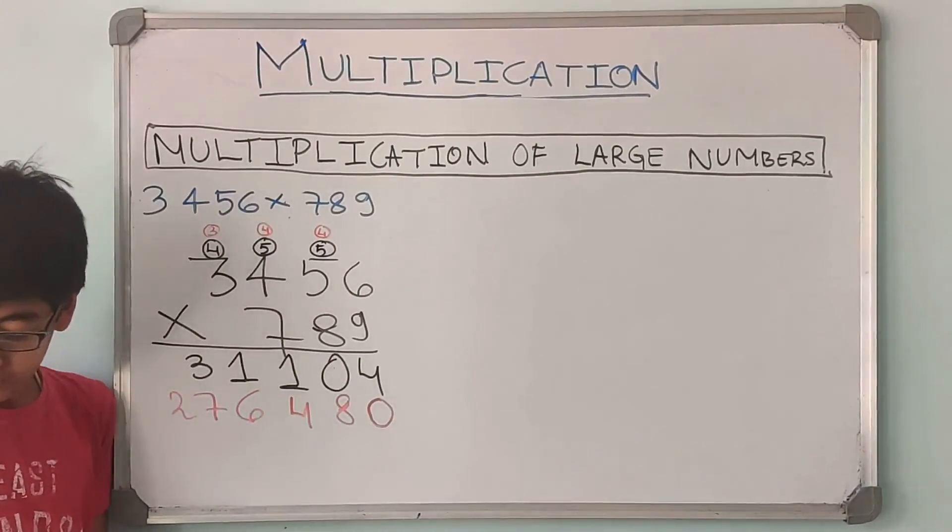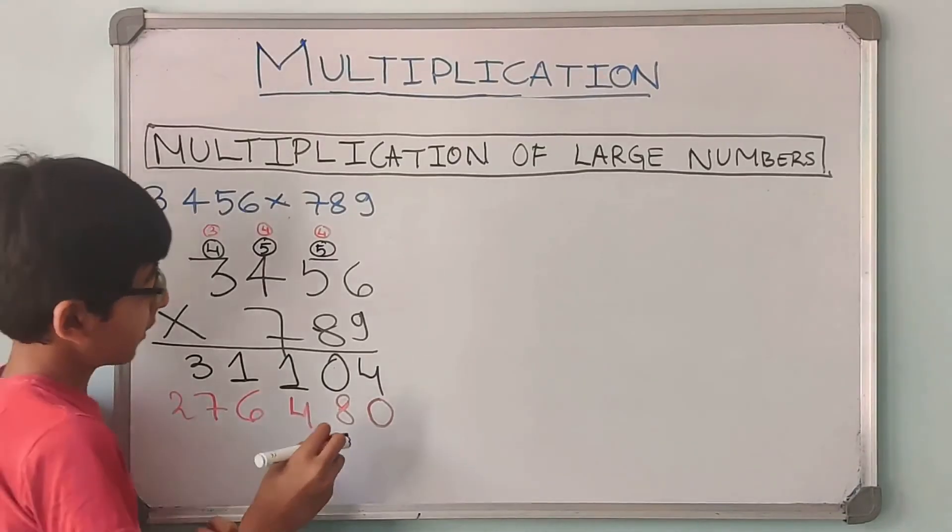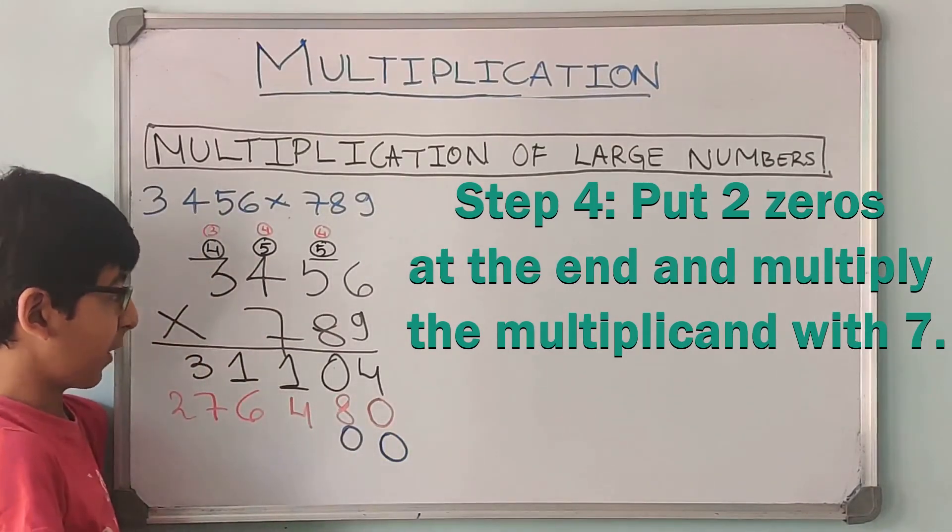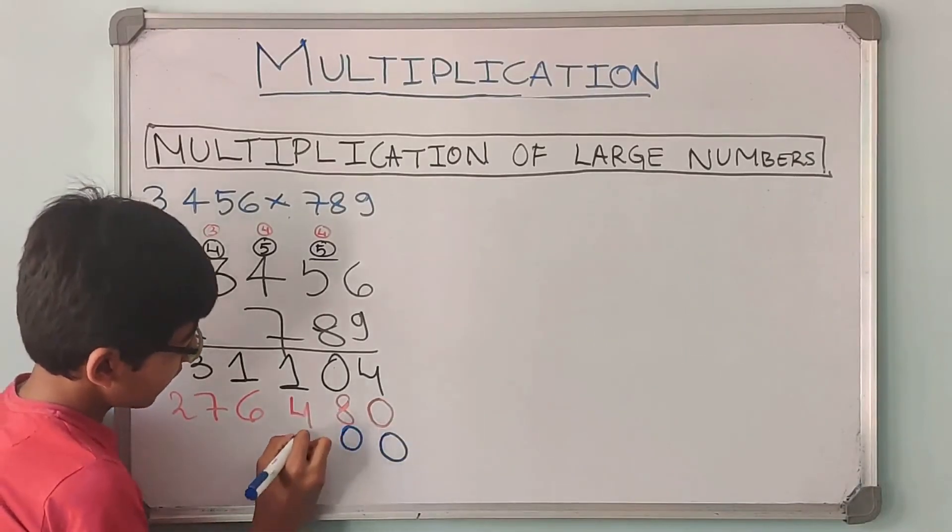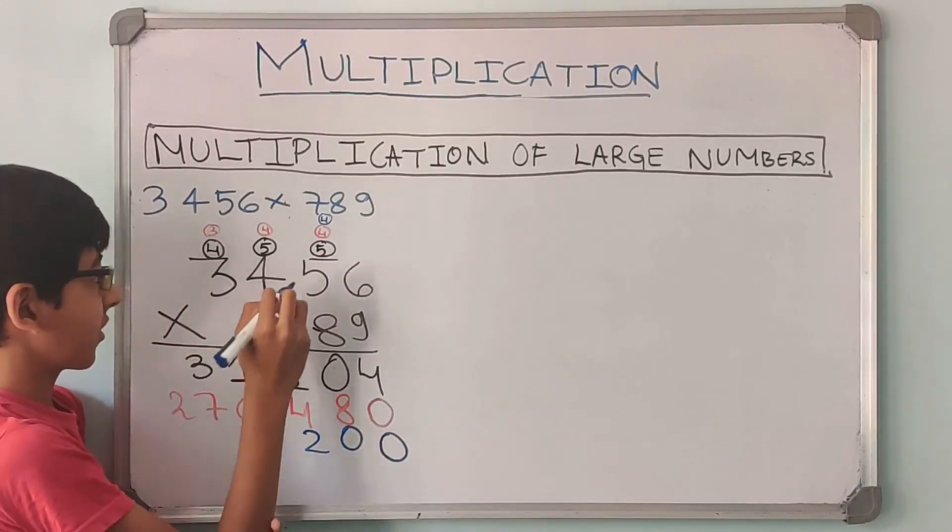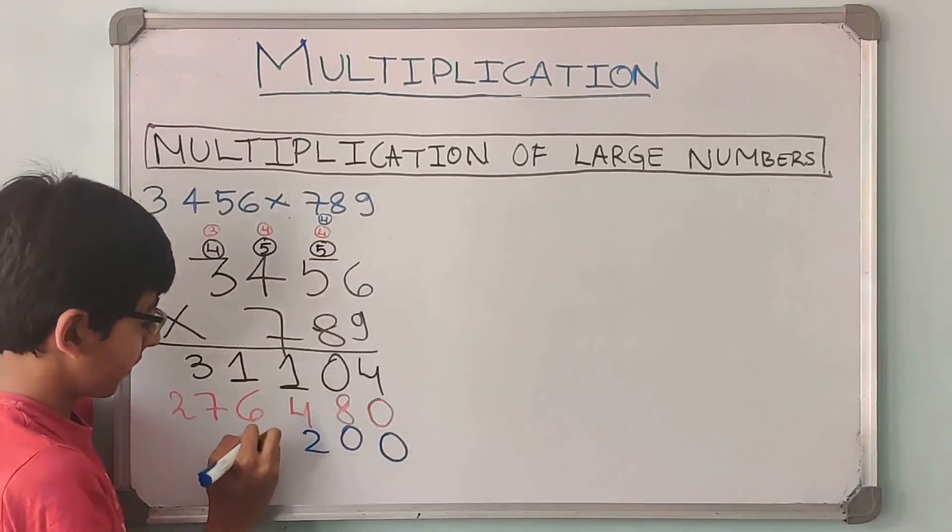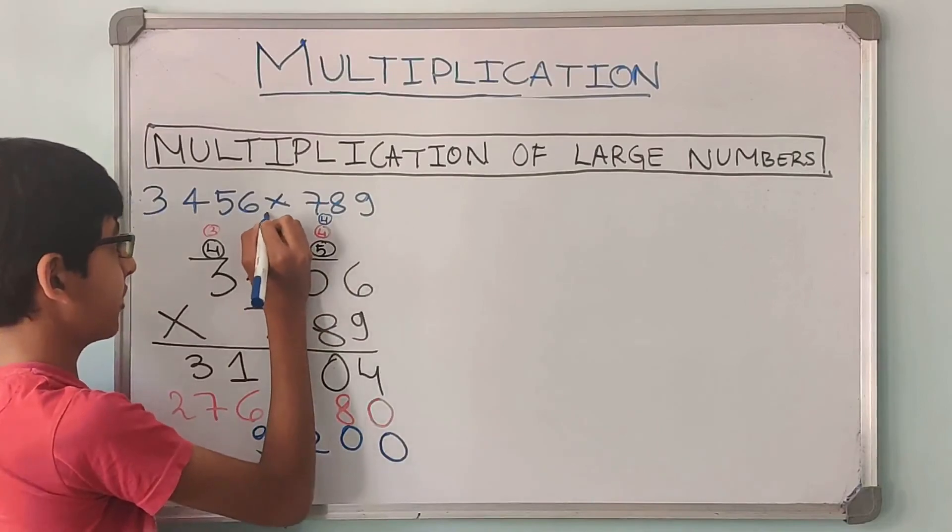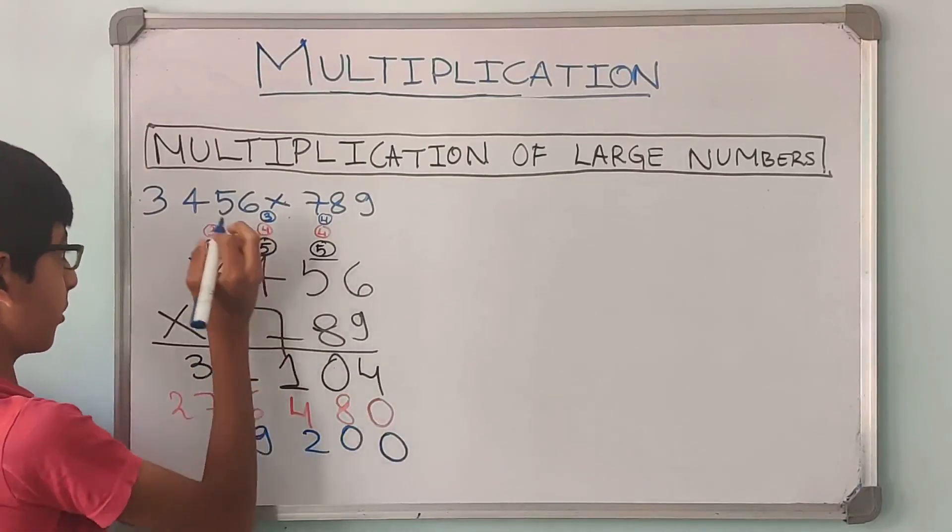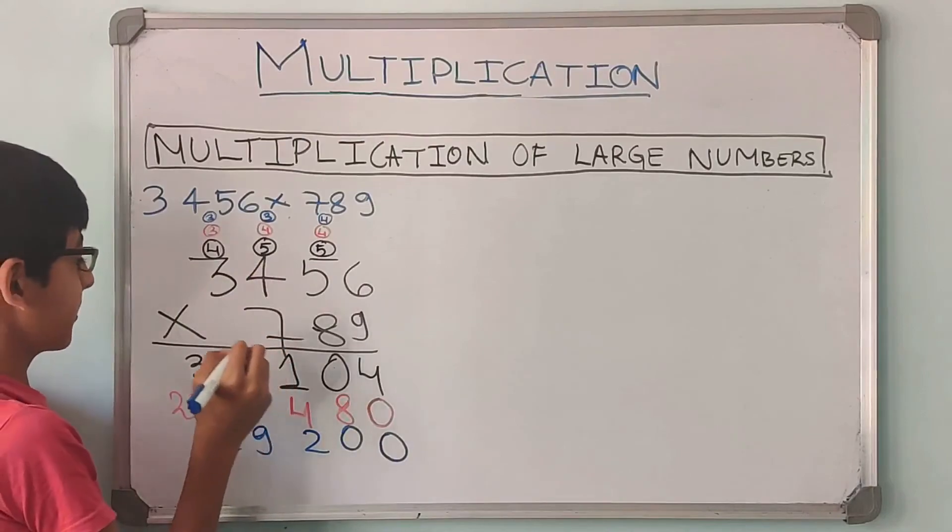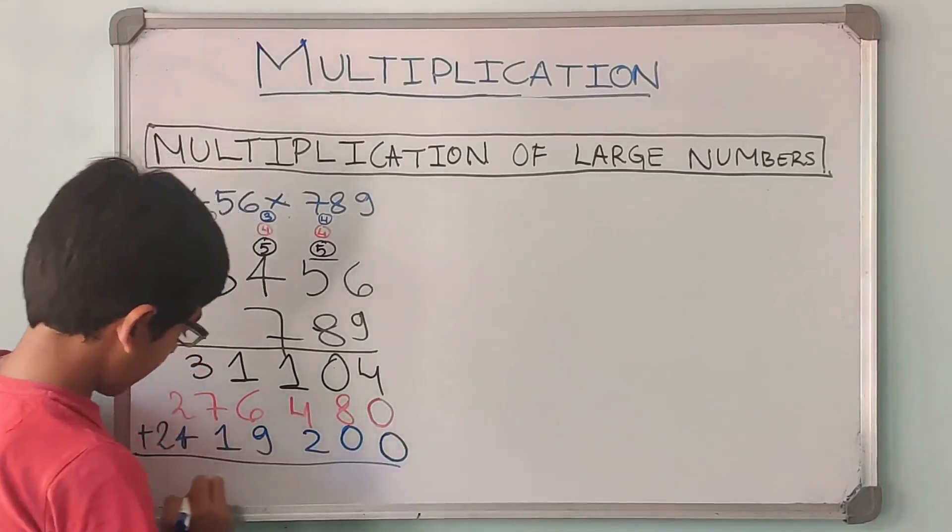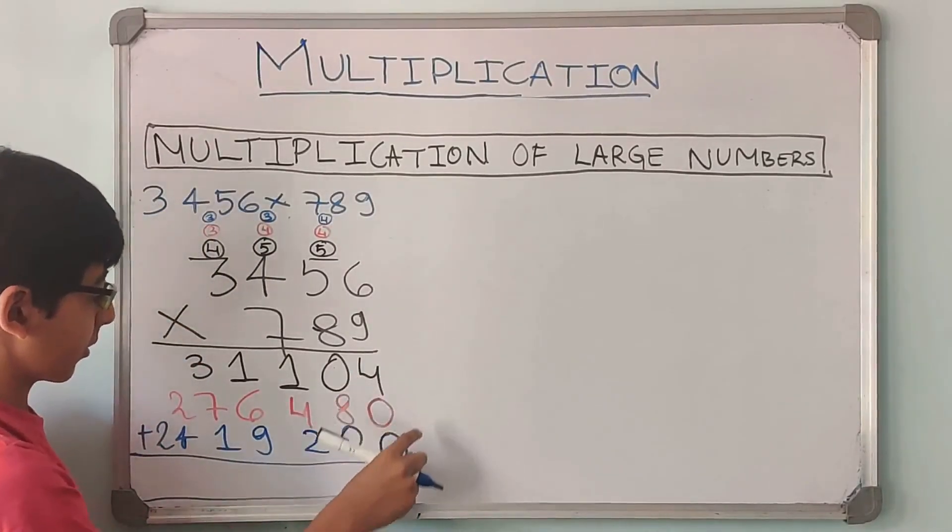Now we have to multiply with 700. So for multiplying with 700 we will put 2 zeros. Then we can multiply with 7. 7 into 6 are 42. 2 comes down, 4 carry forward. 7 times 5, 35 plus 4 is 39. So the 9 is written down and the 3 is carry forward. 7 into 4 is 28, plus 3 is 31. So 1 comes down, 3 is carry forward. 7 into 3 is 21, plus 3 is 24.